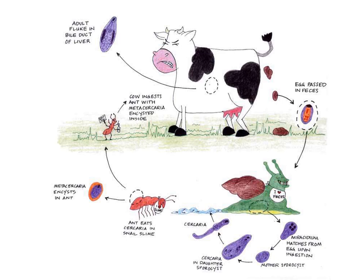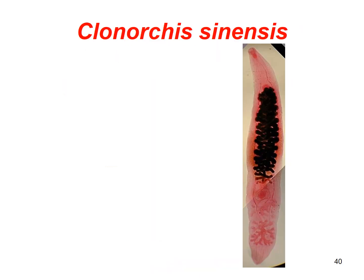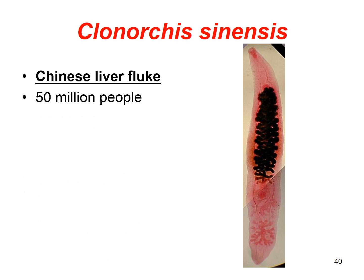Here you can see the visual description — you can start with the cow passing feces and follow through step by step how an adult mammal or vertebrate can get sick with these types of flukes. The species that infect humans can be divided into two groups: schistosomes and non-schistosomes. There are different types — liver flukes, lung flukes — that go to different areas of the body and make you sick.